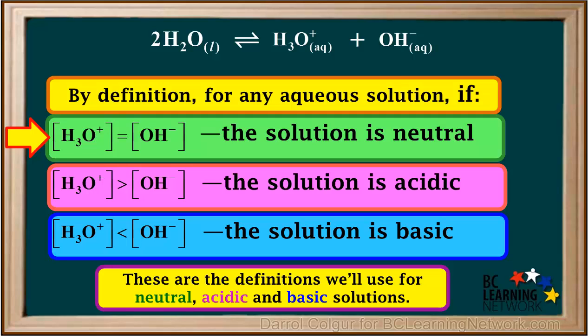In neutral solutions, the hydronium ion concentration is equal to the hydroxide ion concentration. In acidic solutions, the hydronium ion concentration is greater than the hydroxide ion concentration. And in basic solutions, the hydroxide ion concentration is greater than the hydronium ion concentration.